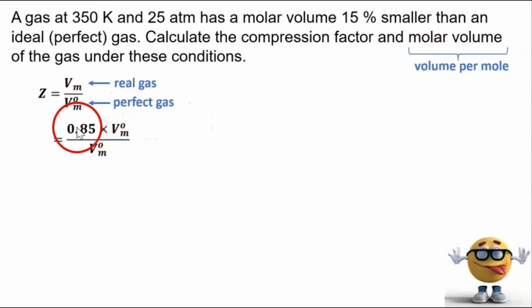All right, well, if we plug things in, we have 0.85 times the perfect gas because it's 15% smaller. So the real gas is 85% the size, the same molar volume of the perfect gas. So we'll just plug that into there. And we cancel out this V_m of the perfect gas, we get a compression factor of 0.85.